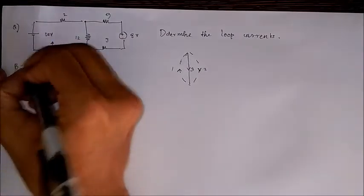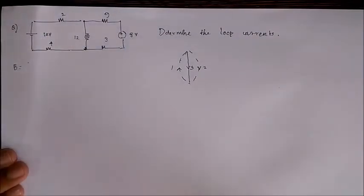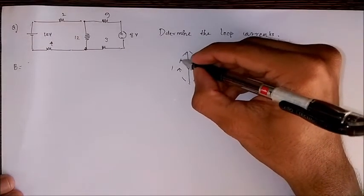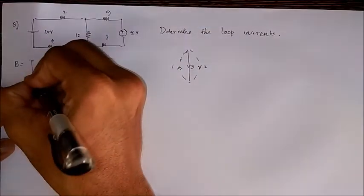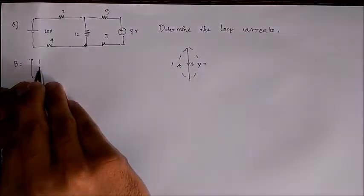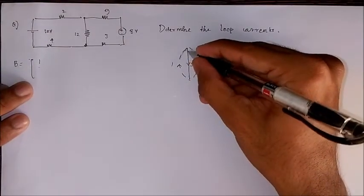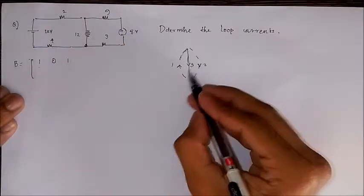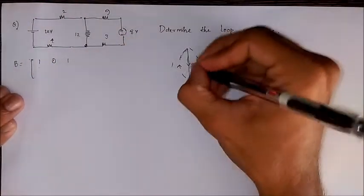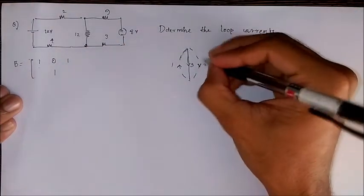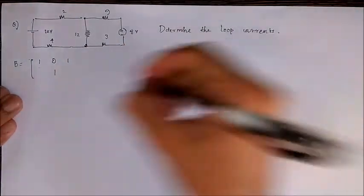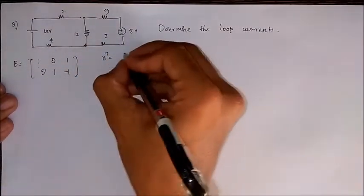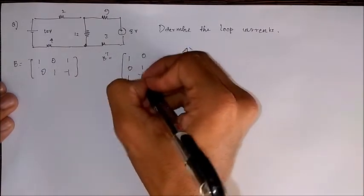Now for writing the tie set matrix we first consider the first loop, that is the loop with link 1. For 1 we put direction plus 1 and going through this we see that 3 is in the same direction as 1, so we put positive sign. As 2 is not in this loop we put 0. Now for loop 2, 2 is always 1 and 3 is opposite that is minus 1 and 1 is 0. This is our B matrix that is tie set matrix. The transpose is 1 0, 1 0, 1 minus 1.